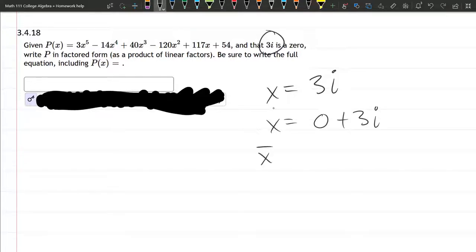So the conjugate, we write that as a bar, 0 plus 3i conjugate is 0 minus 3i, which we could just write as negative 3i. That means that negative 3i is also a zero.